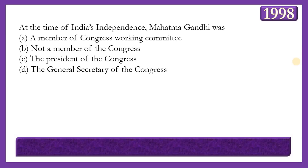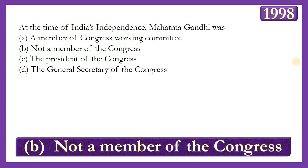Next question: At the time of India's independence, Mahatma Gandhi was: a member of the Congress Working Committee; not a member of the Congress; the president of the Congress; or the general secretary of the Congress. The answer is option B — he was not a member of the Congress. The president of the INC during 1947 was J.B. Kripalani. Gandhi was a mentor for national policy formation and had presided over only one Congress session — the Belgaum session.